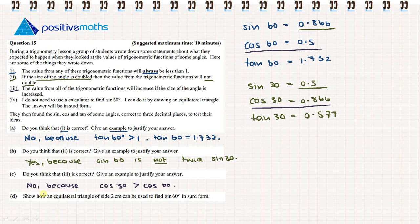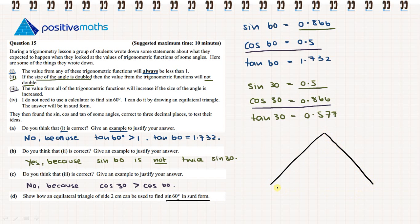Part D: show how an equilateral triangle of side 2 centimetres can be used to find the sine of 60 degrees in surd form. To do this we need to draw this triangle from scratch — it will help us identify the sine, cosine and tan of 30 and 60 degrees. We start by drawing an equilateral triangle where each side is 2 centimetres, meaning all angles are 60 degrees.